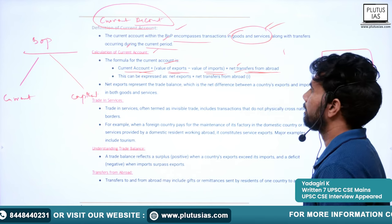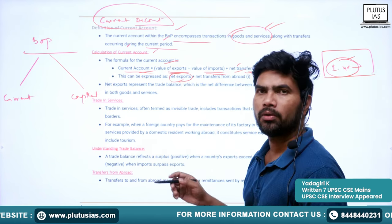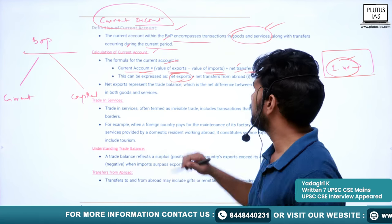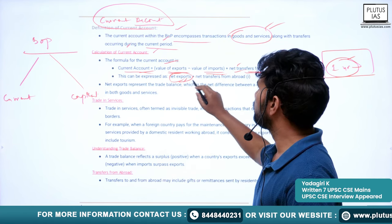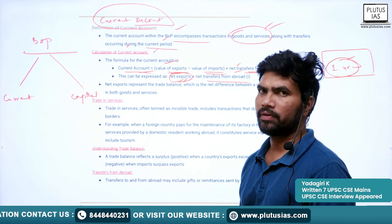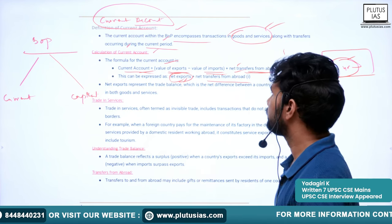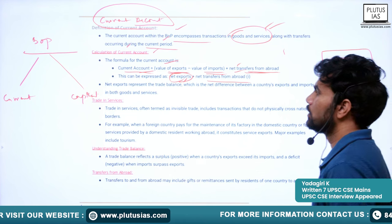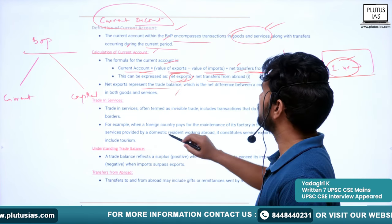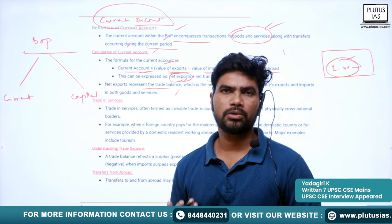This can also be expressed as net exports plus net transfers, which gives the current account formula. Net exports represent the trade balance — the net difference between a country's exports and imports. Apart from that, there is trade in services, often termed as invisible trade, because actual services do not physically cross borders in the same way goods do.